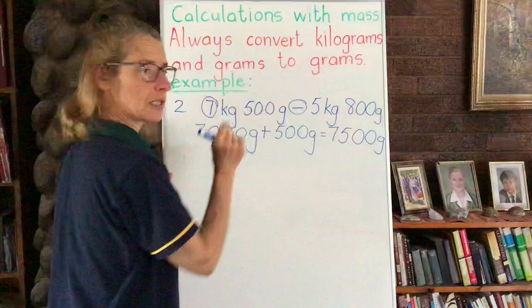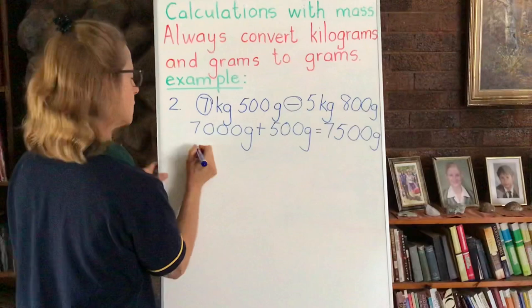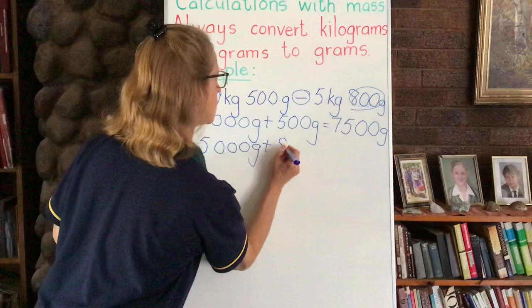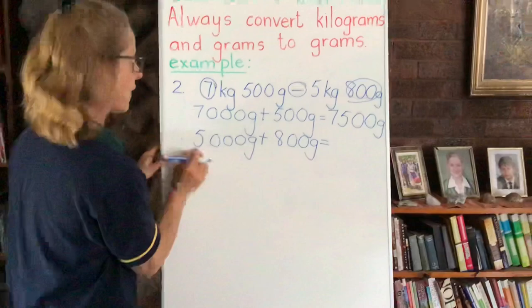That's right, so 5 times 1000 gives us 5000. We're going to add that 800 grams on, so we're going to put it over here, 800 grams. And then we're going to put our 5000 and our 800 together so we get 5800.